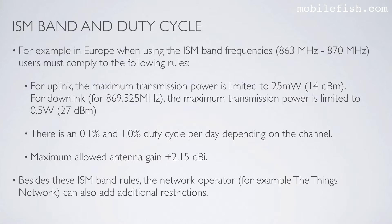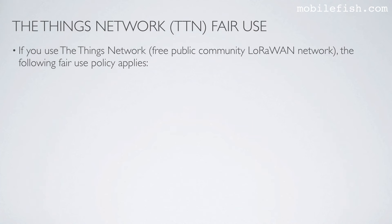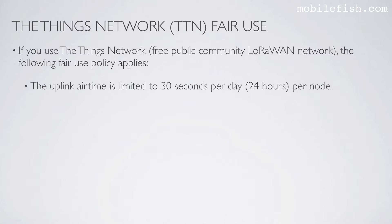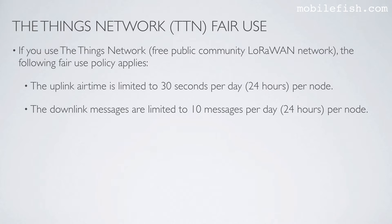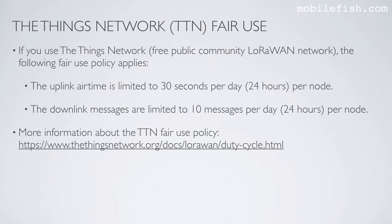Besides these ISM band rules, the network operator — for example the Things Network — can also add additional restrictions. If you use the Things Network, which is a free public community LoRaWAN network, the following fair use policy applies: the uplink airtime is limited to 30 seconds per day per node, and the downlink messages are limited to 10 messages per day per node. More information about the Things Network fair use policy can be found at this location.